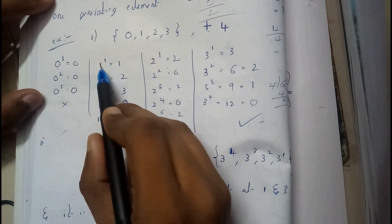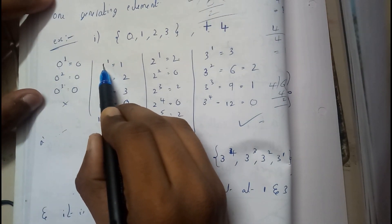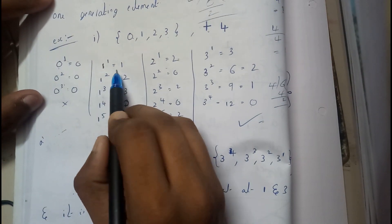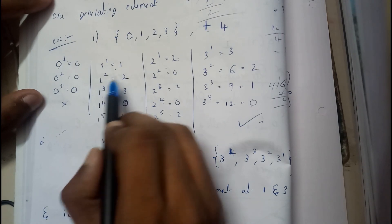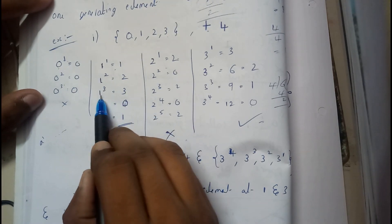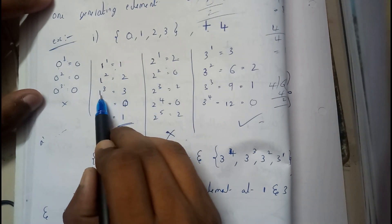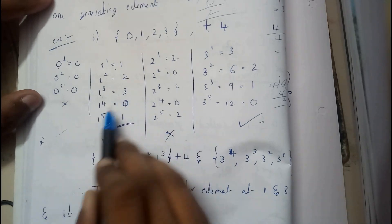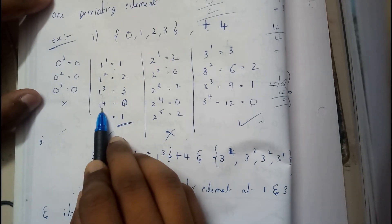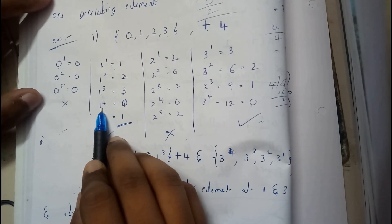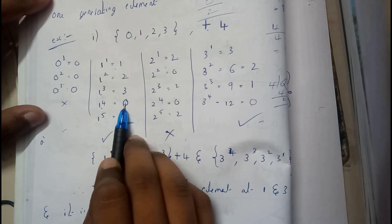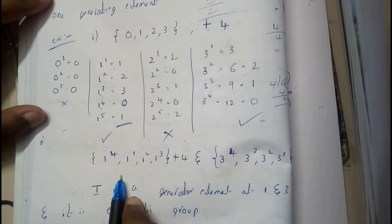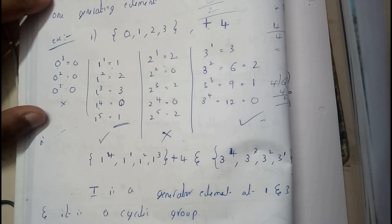For element 1: 1 mod 4 = 1; 1+1 = 2 mod 4 = 2; 1+1+1 = 3 mod 4 = 3; 1+1+1+1 = 4 mod 4 = 0. So the powers of 1 give {1, 2, 3, 0}, which is all elements. Continuing, it repeats 1, 2, 3, 0 again.